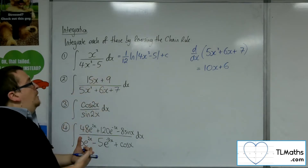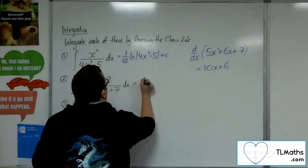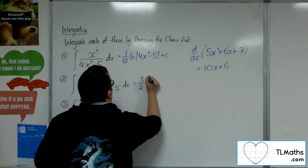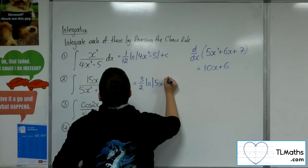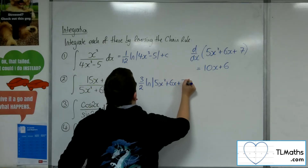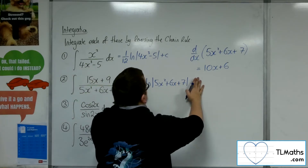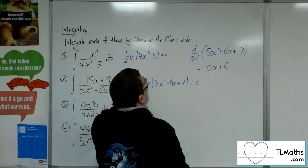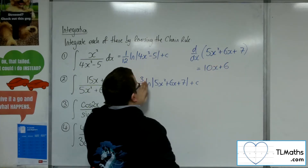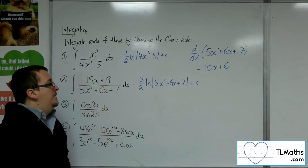So I've actually got 3 halves too many of what I need. So this is 3 halves log of 5x squared plus 6x plus 7, plus C. Because that log will differentiate to (10x plus 6) over (5x squared plus 6x plus 7), and I would need to multiply it by 3 halves to get to the 15x plus 9.